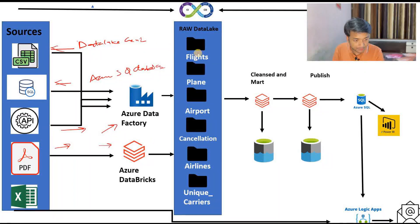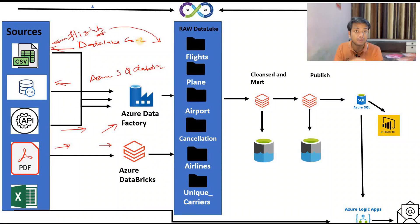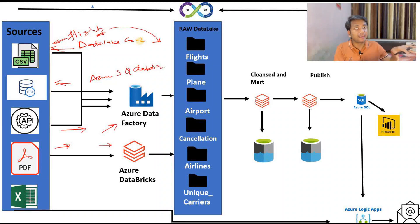You might see that I have written here: flights, plane, airport, cancellation, airlines, unique carrier and so on. What we will actually be doing - suppose we have this CSV file, which is flight data. I will be copying it into a flight folder, and inside that flight folder I will have date-based data files. Data is coming on a daily basis, so in the raw layer we should store at least seven or thirty days of data - we should not override the data every time, we should append. That's why I am creating folders like flights, plane, airport, cancellation and so on, and I will append data on a daily basis.